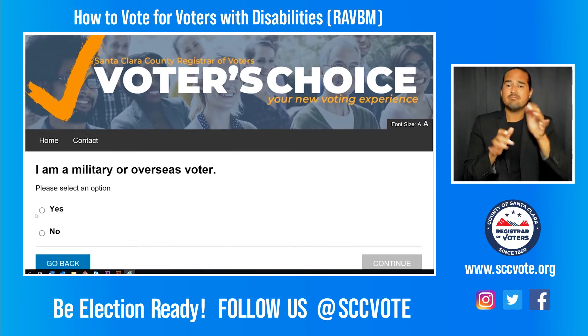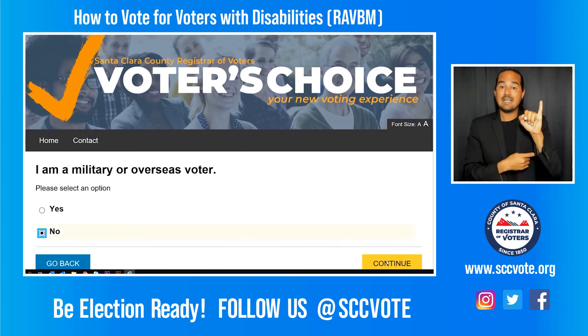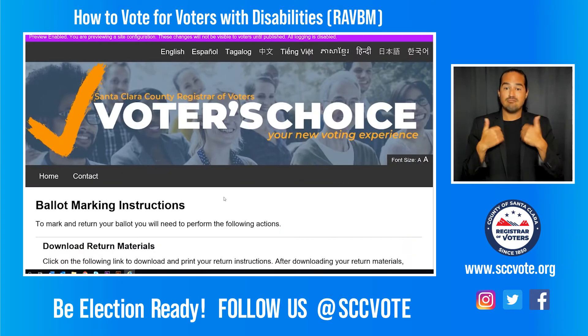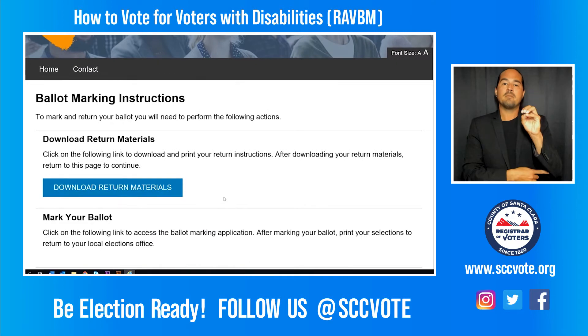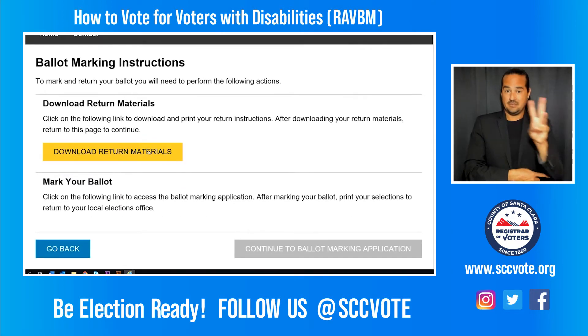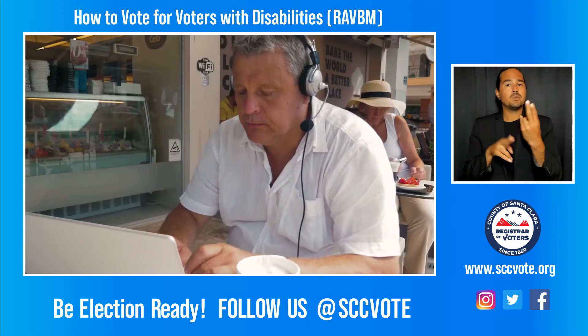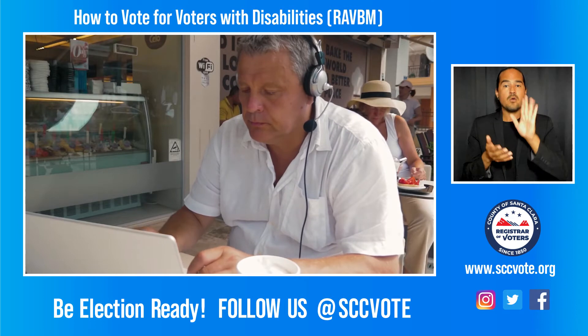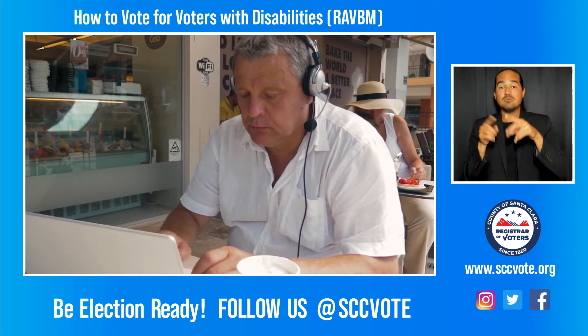Input your information and click on the current election. Your address will appear as a link to your electronic ballot. Click on the link and you will be directed to the Democracy Live website. You can mark the ballot with the help of your assistive technology.